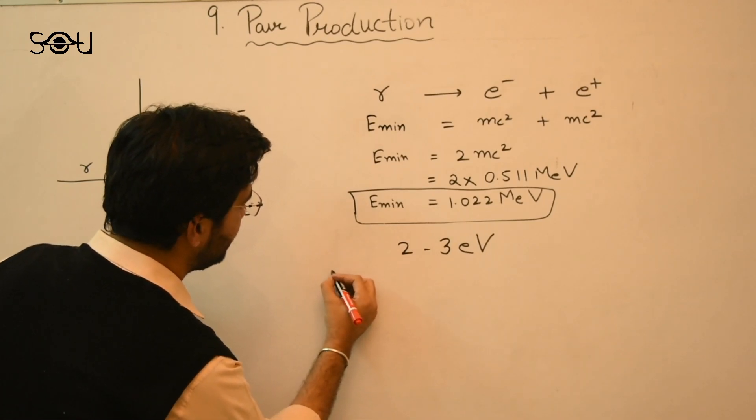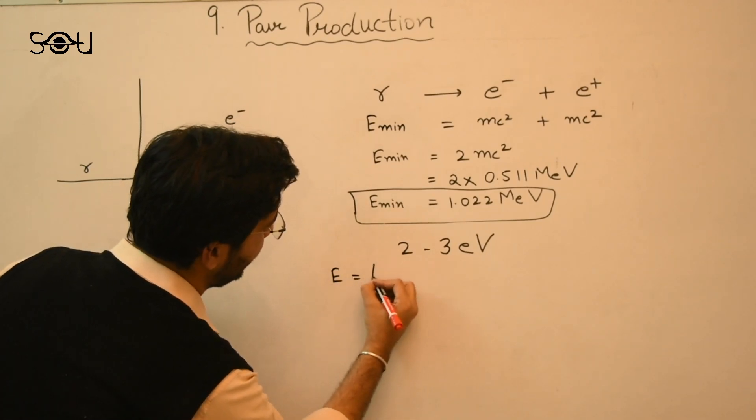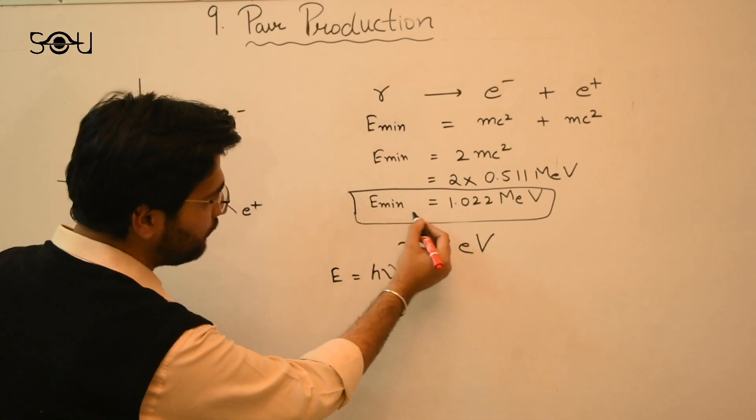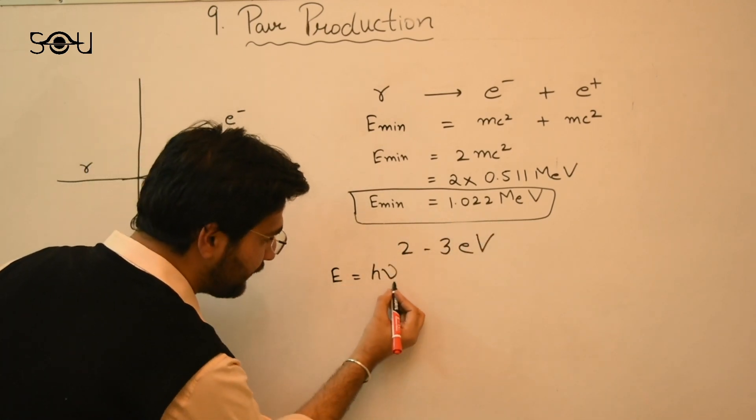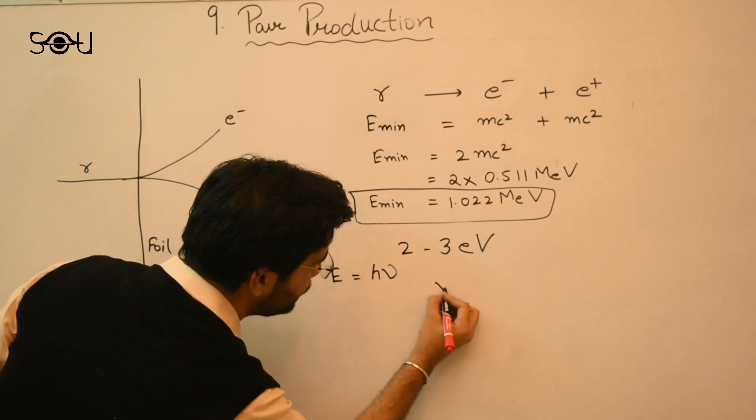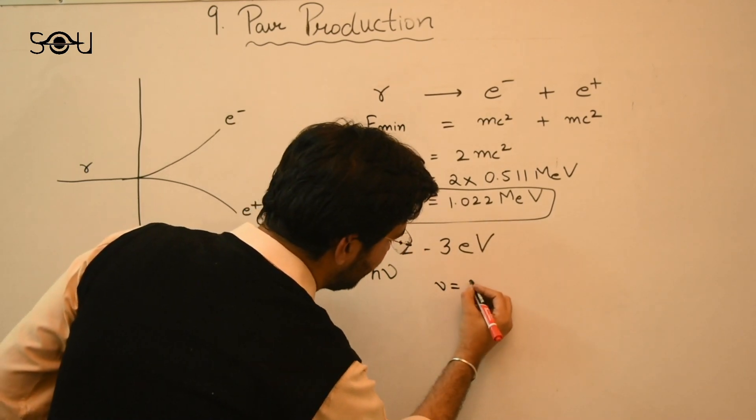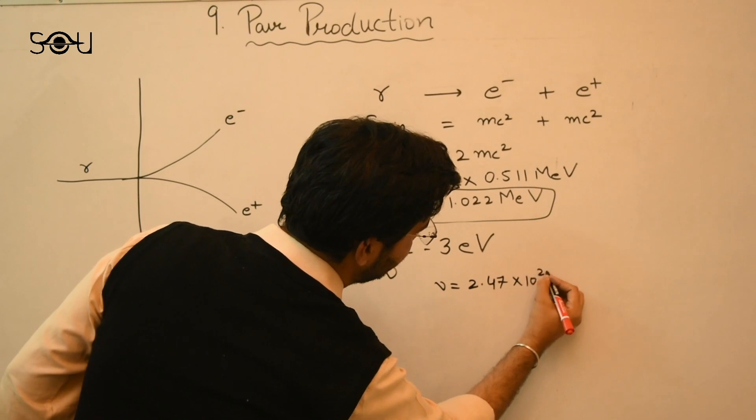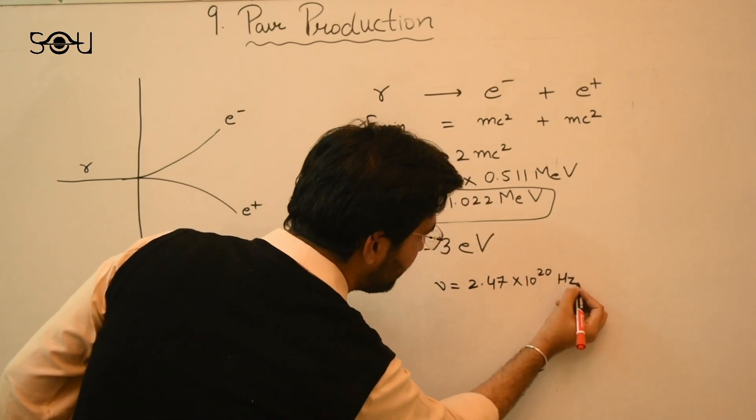So using Planck's law, E is equal to H nu, you can find the frequency by plugging in the value of E from here. You can find the frequency of the radiation that is required. When you plug in the values, nu comes out to be the frequency 2.47 into 10 raised to power 20 Hertz. This is the minimum frequency.